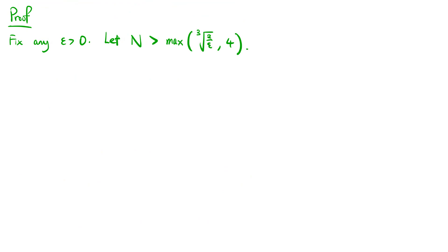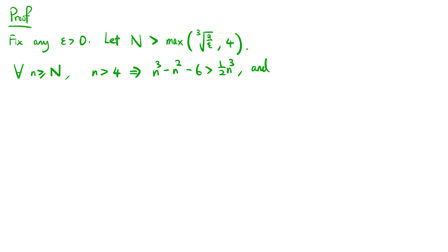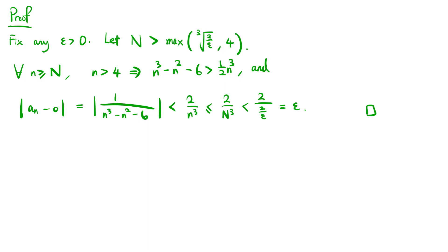Now we can write the proof. Fix any epsilon greater than 0 and let N be greater than the maximum of the cube root of (2 over epsilon) and 4. For n greater than or equal to N, n greater than 4 implies n cubed minus n squared minus 6 is greater than one half n cubed, and the absolute value of an minus 0, which equals the absolute value of 1 over (n cubed minus n squared minus 6), is less than 2 over n cubed, which is less than or equal to 2 over N cubed, which is less than 2 over (2 over epsilon), which equals epsilon. This completes the proof.